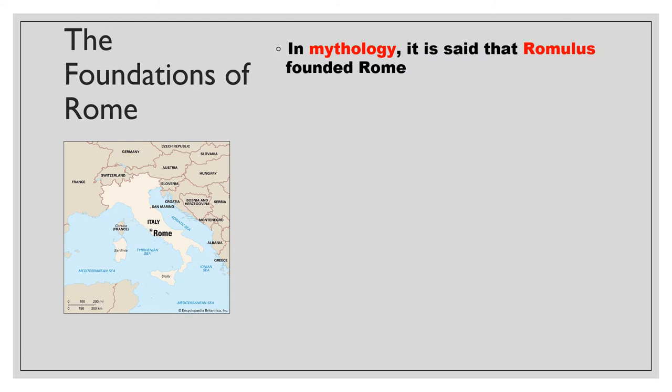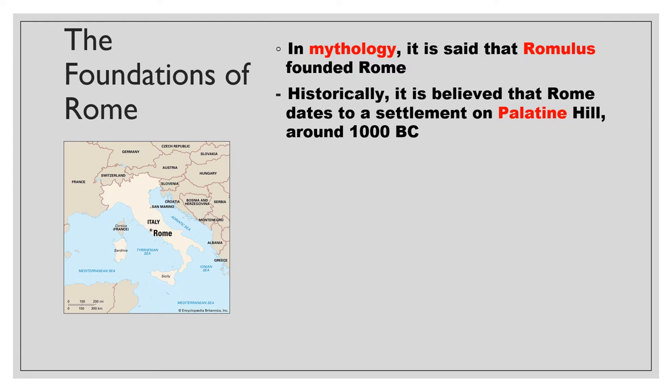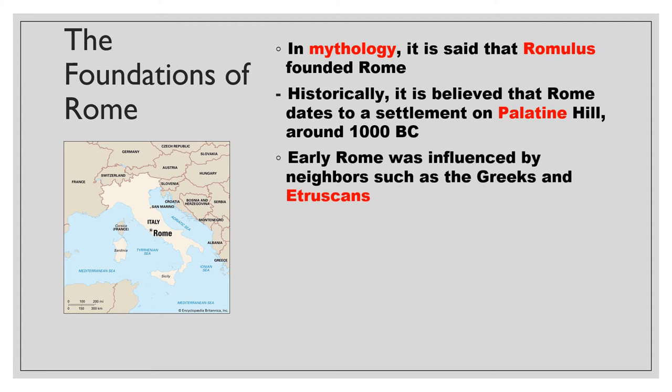Closer to actuality, it's believed that there was a settlement that popped up on Palatine Hill around 1000 BC. That's more of the historical rather than the mythological. Early Rome was influenced by neighbors such as Greece and the Etruscans, who were in the region of Italy. The Latin language, which would become the language of Rome, was heavily influenced by Greek, along with some other native languages in Italy.